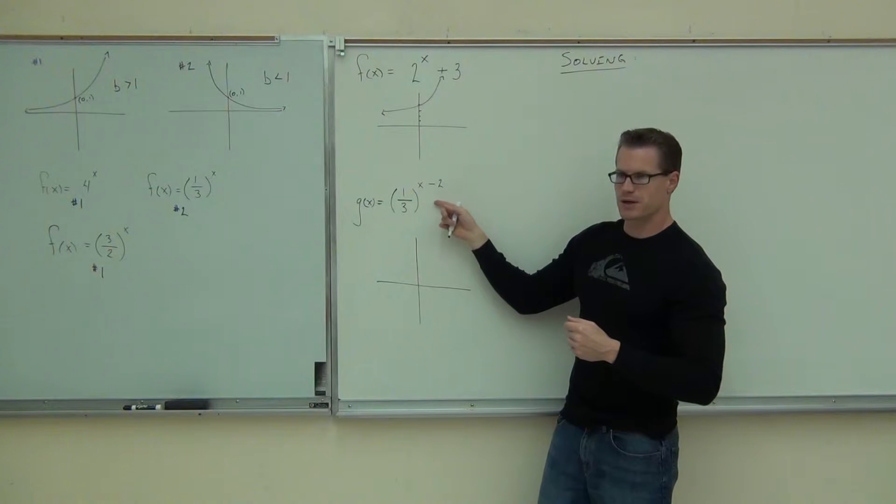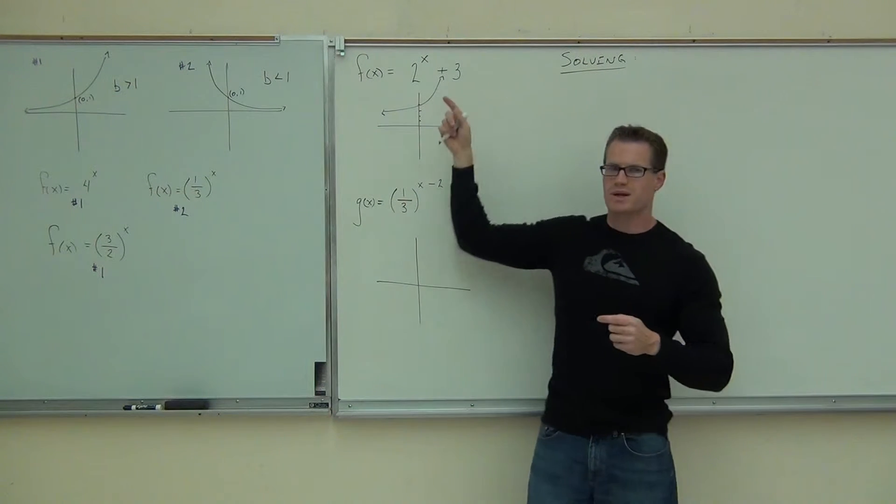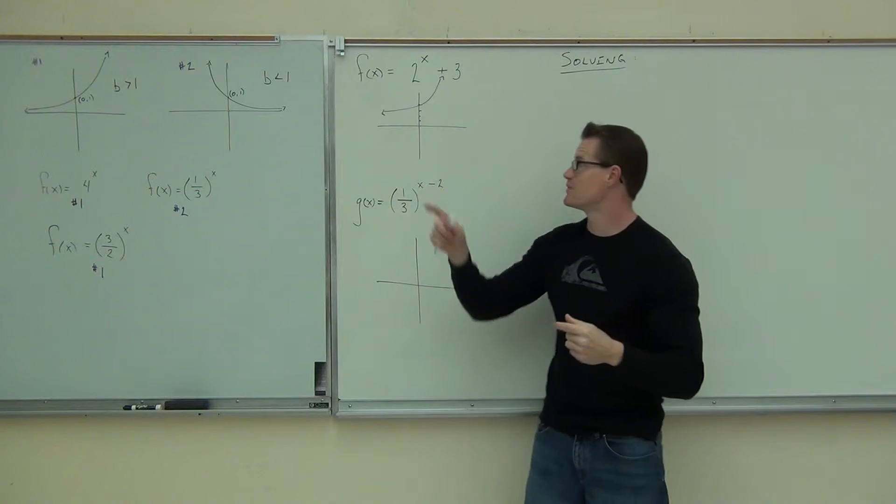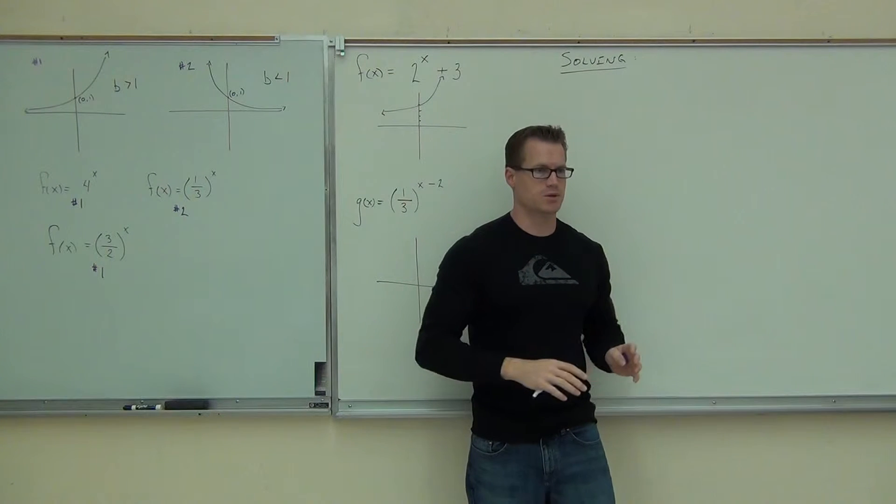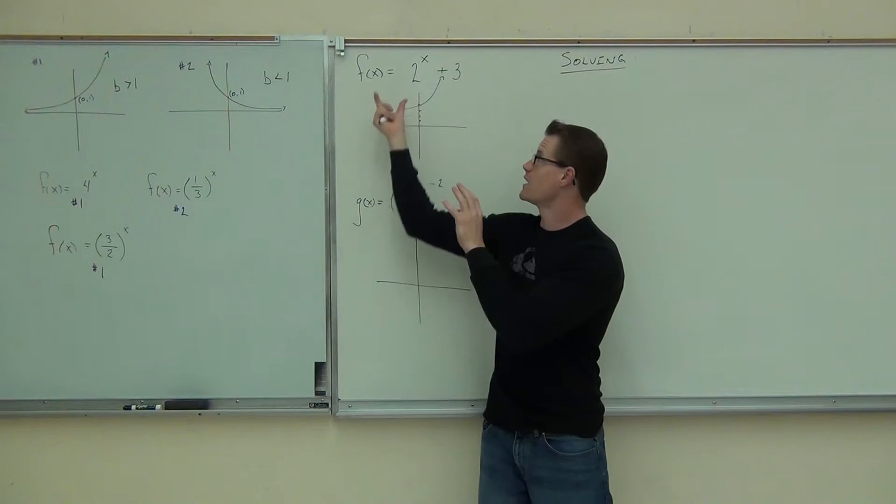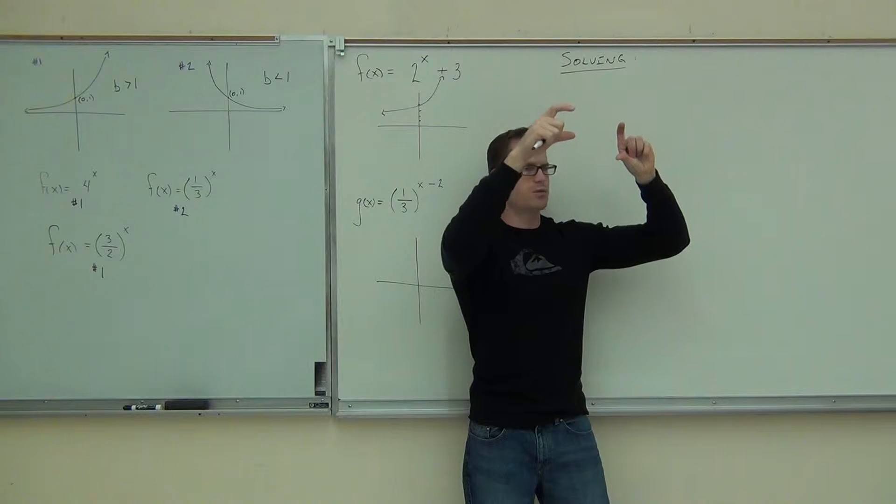So this is definitely like graph number 1, b is greater than 1. Definitely like graph number 2, b is less than 1, it's a fraction less than 1. Now, this minus 2, does it look different than this plus 3? This plus 3 wasn't attached to the exponent, was it? It wasn't within the function, it was after the function. It said you have 2 to the x, then after you do 2 to the x, you're going to add 3 to it. You with me on that?